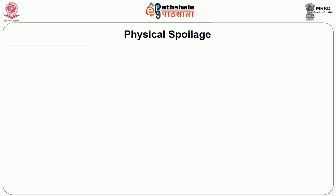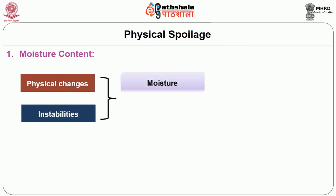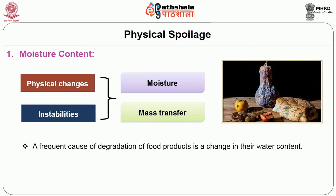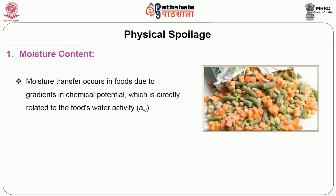First we can see about the components involved in physical deterioration. The first is moisture content. Most other physical changes or instabilities involve moisture or mass transfer of components in the food. A frequent cause of degradation of food products is a change in their water content — that is, water loss, gain, or migration. The change in moisture alone may cause the product to become unacceptable, though frequently it also leads to other problems such as microbial or chemical degradation. Moisture transfer occurs in foods due to gradient in chemical potential, which is directly related to a food's water activity.